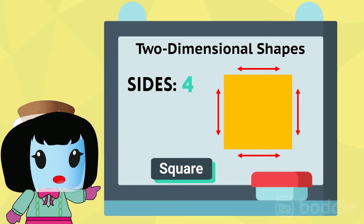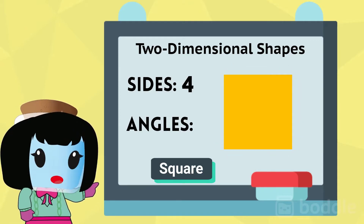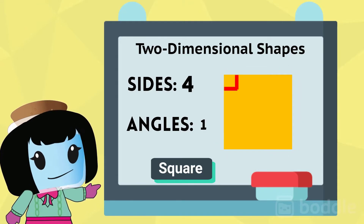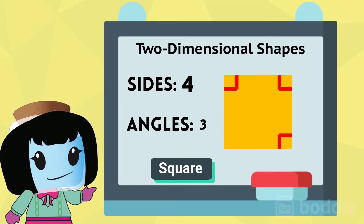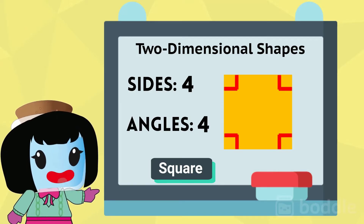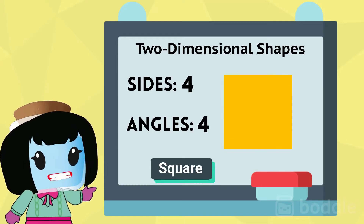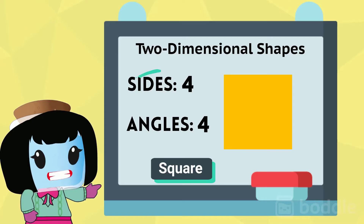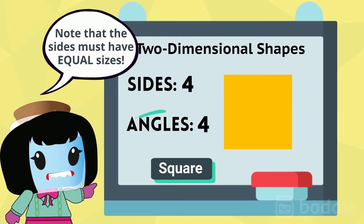Now let's count how many angles it has. One, two, three, four. It has four angles. So we would describe a square by saying it has four sides and four angles.